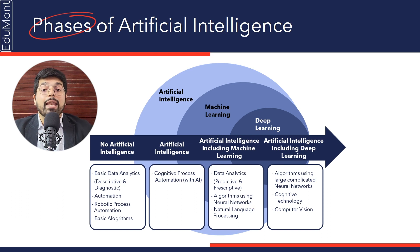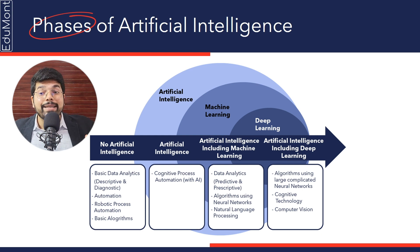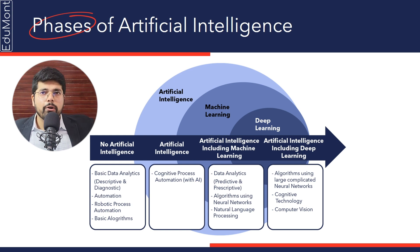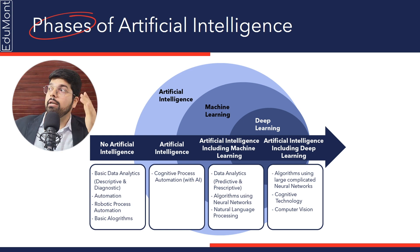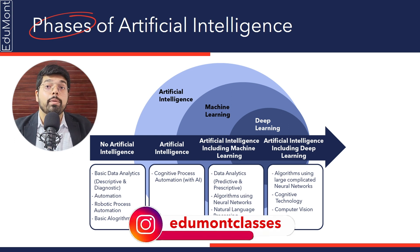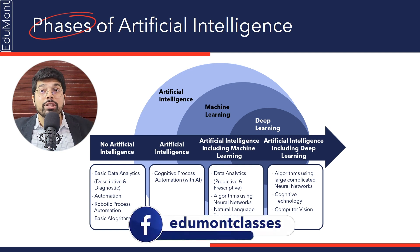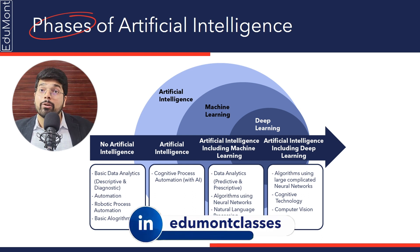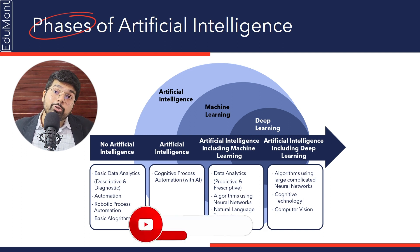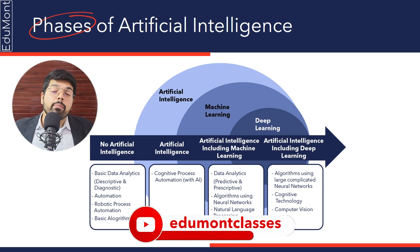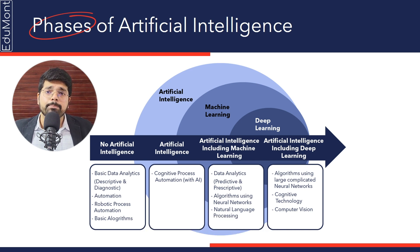Then comes artificial intelligence including deep learning — this is the next level. Deep learning means algorithms are being used on large-size data and large networks of data. Cognitive technology is being put to use, and we have computer vision — the ability to do the same job which was previously done by a human individual.